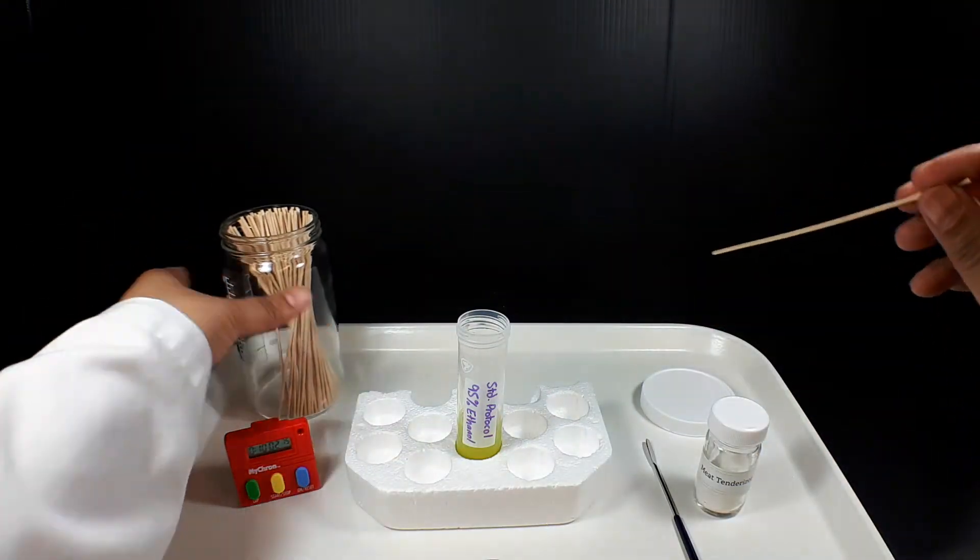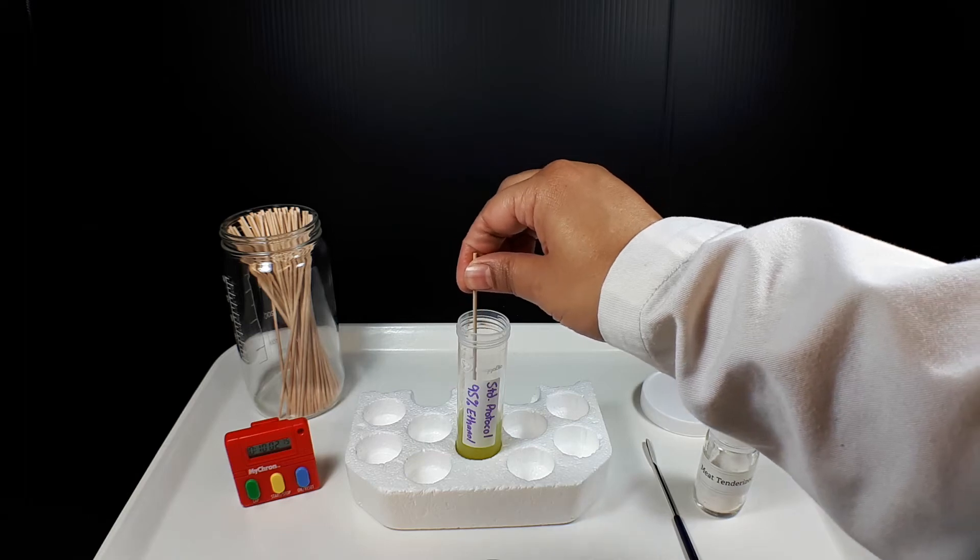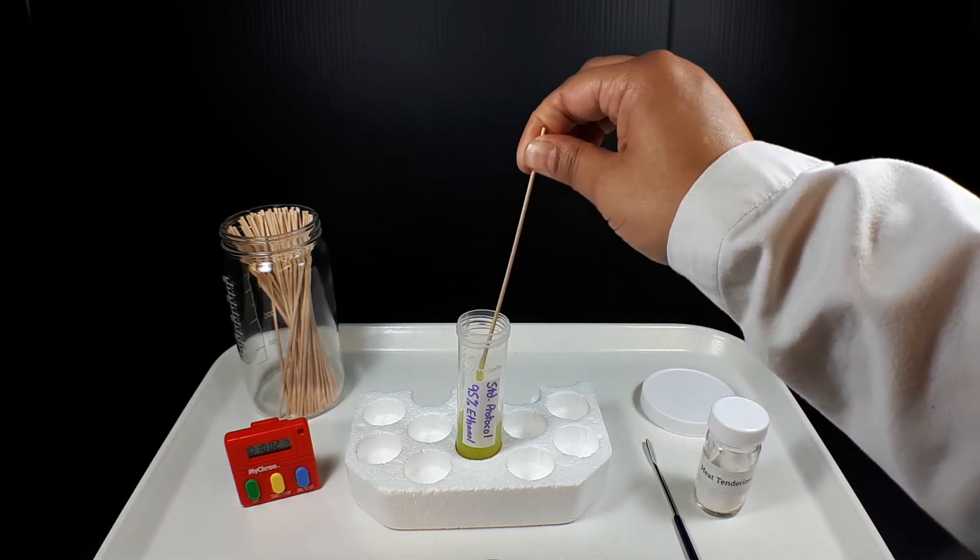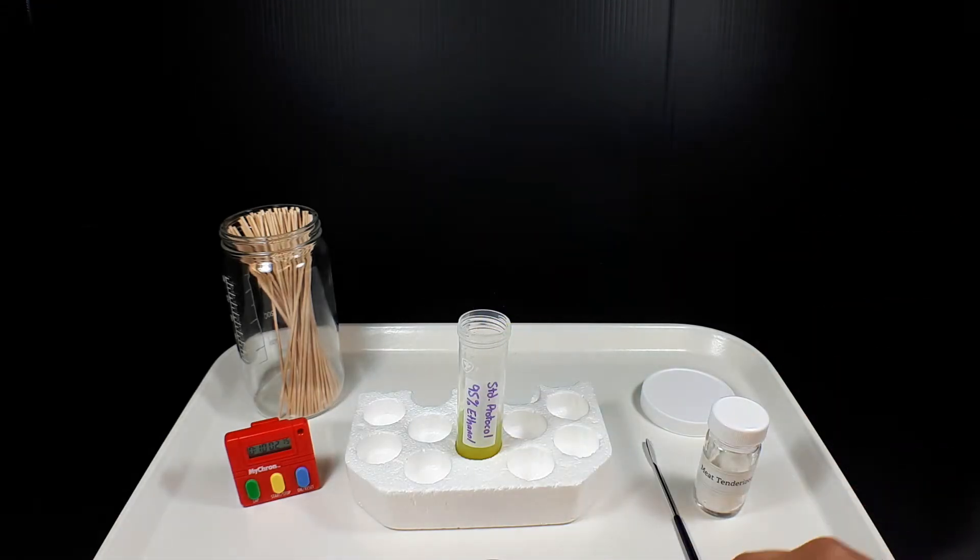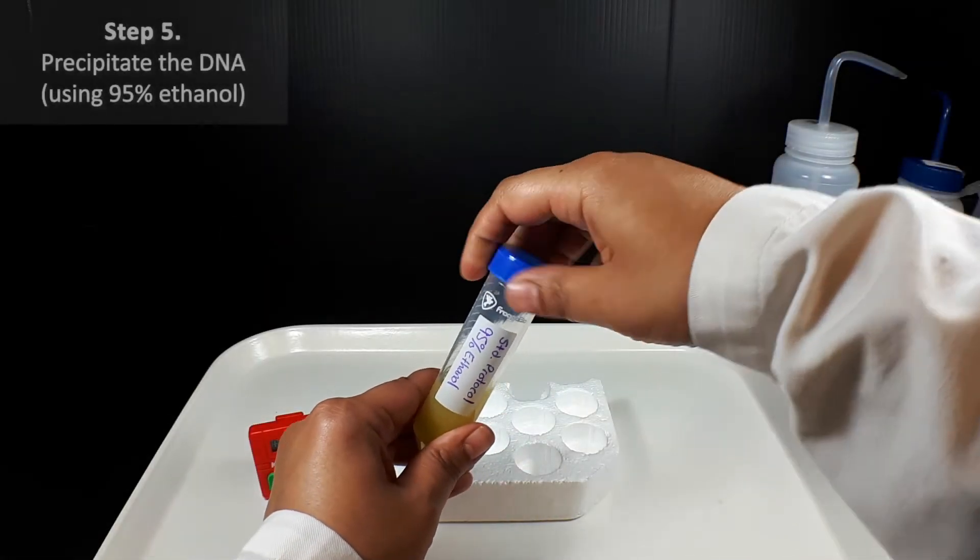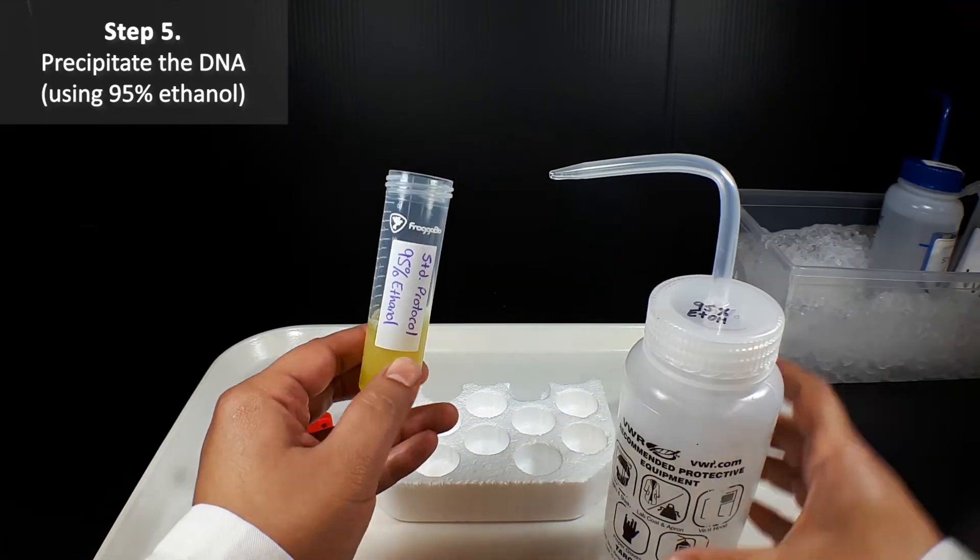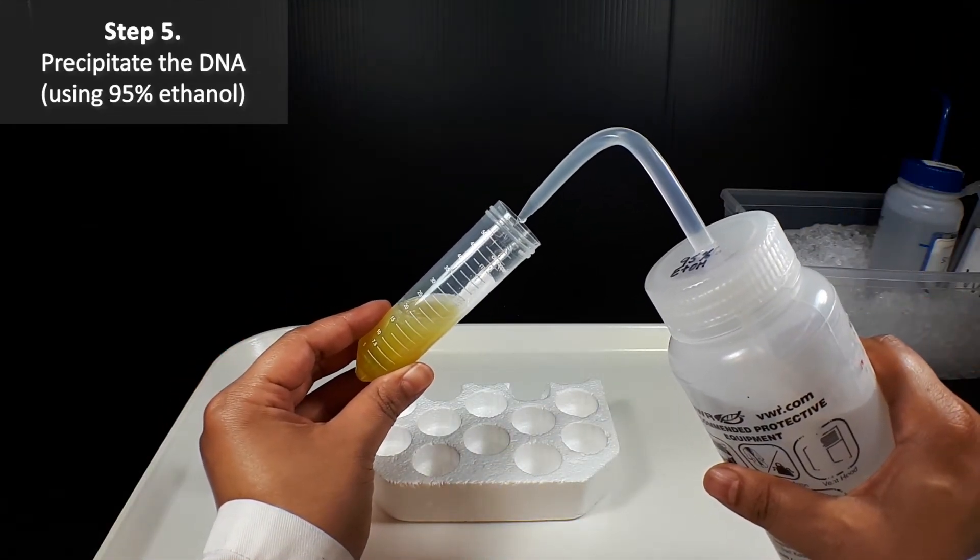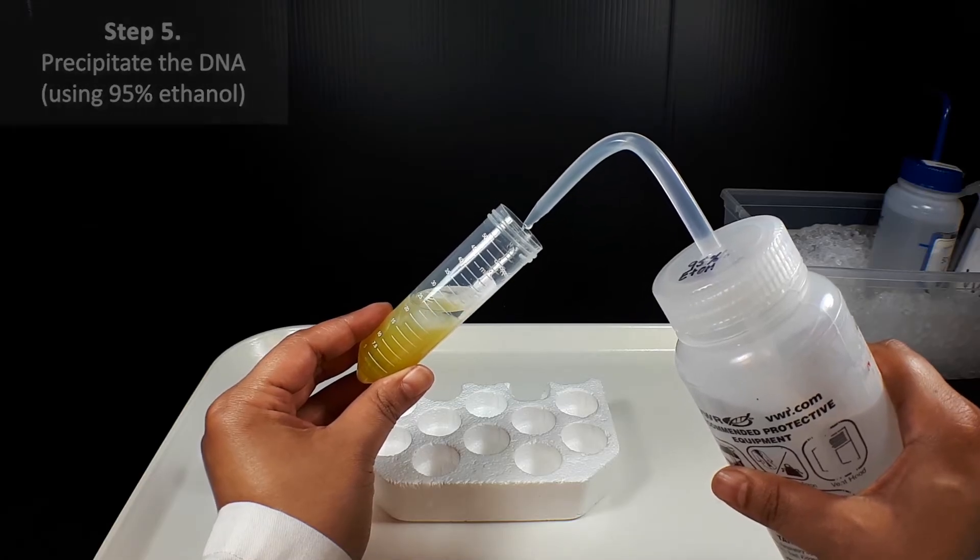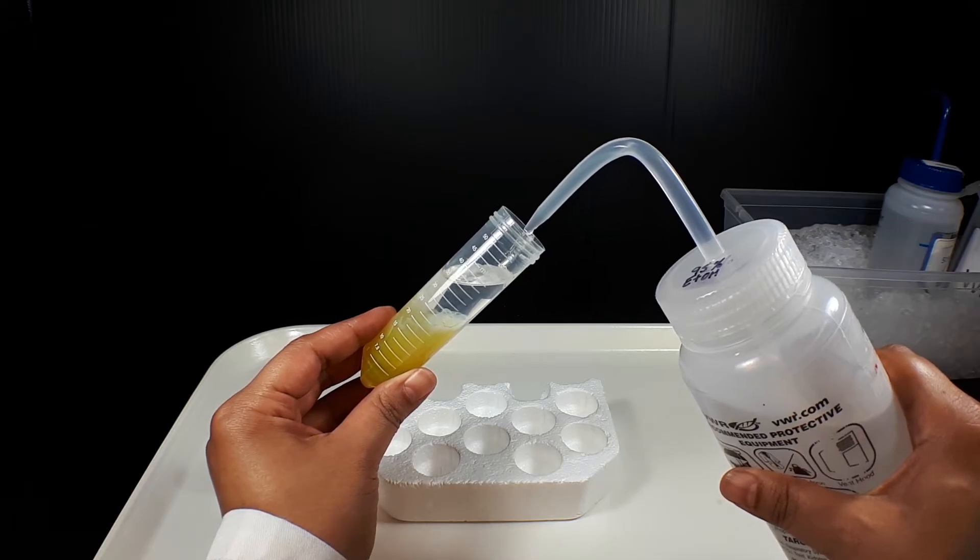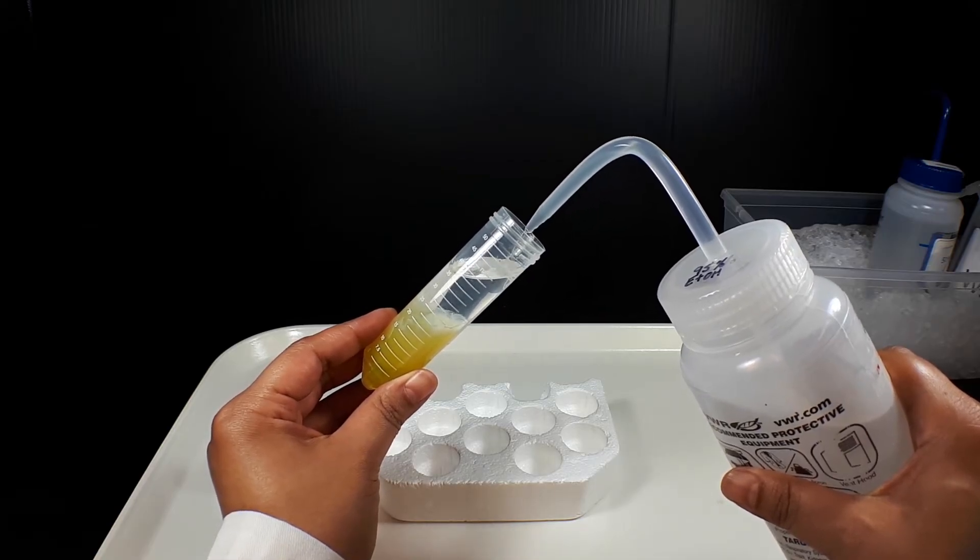Stir the protease into the mixture very gently, since over-mixing can break apart the DNA. We're finally ready to precipitate the DNA. Slowly add 20 milliliters of ice-cold 95% ethanol down the side of the tube, so that it forms a layer on top of the extraction mixture.